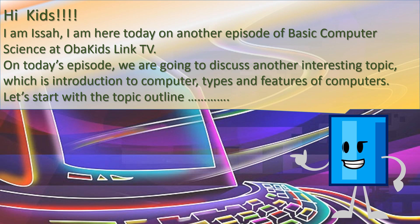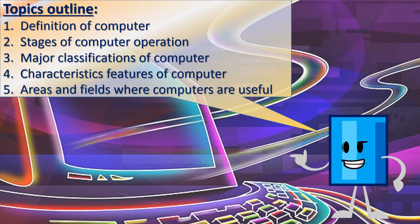Let's start with the Topic Outline. 1. Definition of Computer. 2. Stages of Computer Operation. 3. Major Classifications of Computer. 4. Characteristic Features of Computer. 5. Areas and Fields where Computers are Useful.